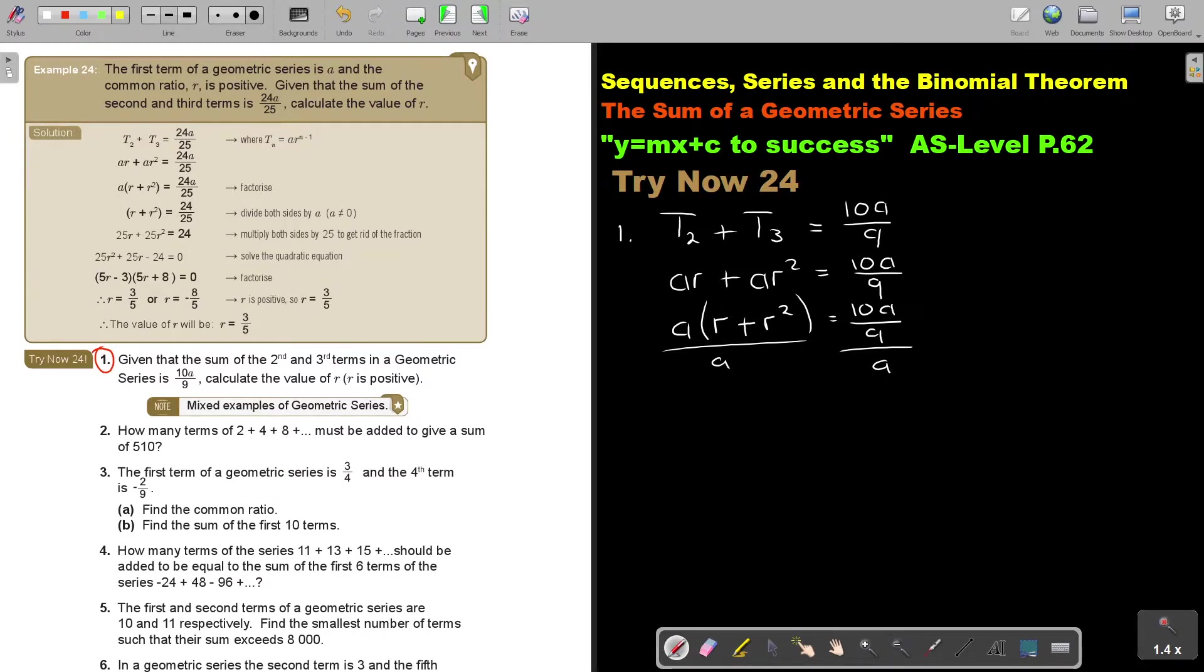I divide by A. And if I divide by A, it will be 10A over 9 multiply 1 over A. Cancel, cancel. So it's 10 over 9.